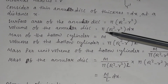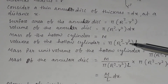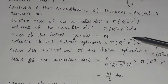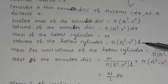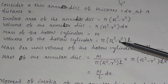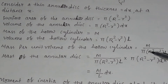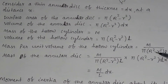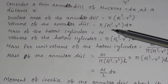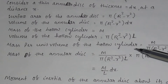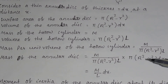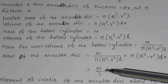The volume of the hollow cylinder will be equal to π(R² − r²) × l, the surface area multiplied by the length. The mass per unit volume will be equal to m divided by π(R² − r²) × l. The mass of the annular disc equals the volume of the annular disc π(R² − r²) dx multiplied by the mass per unit volume, which simplifies to m/l × dx.